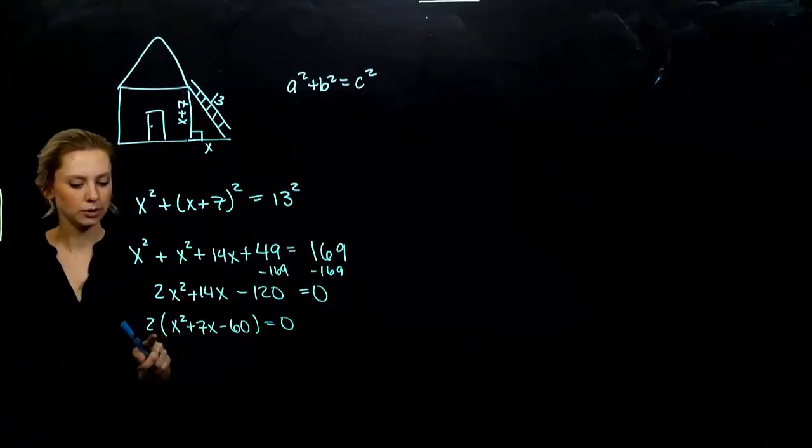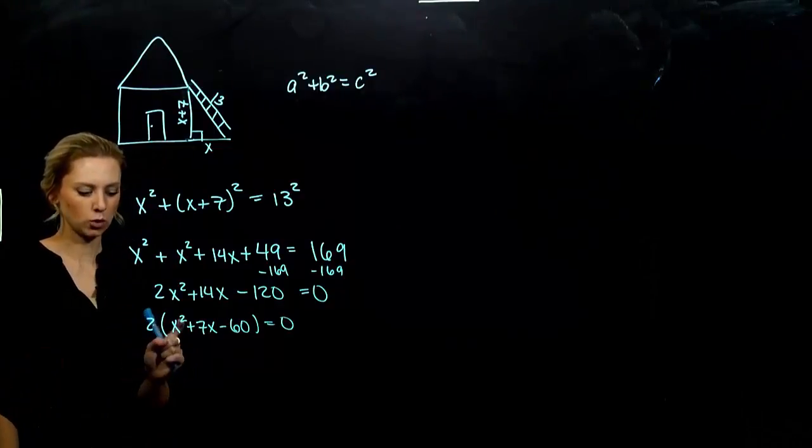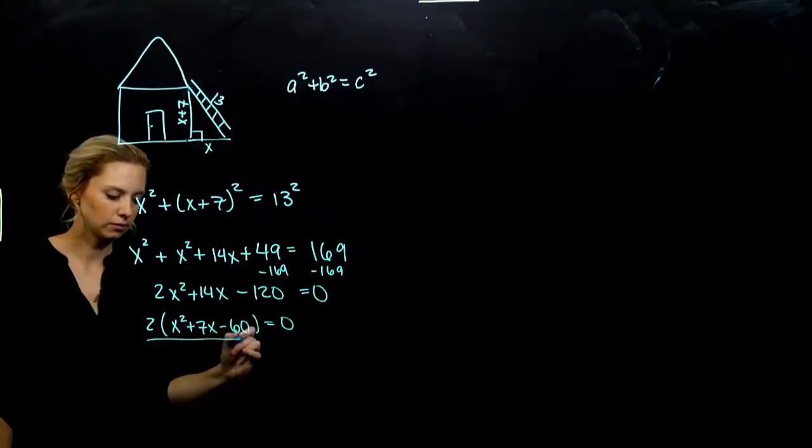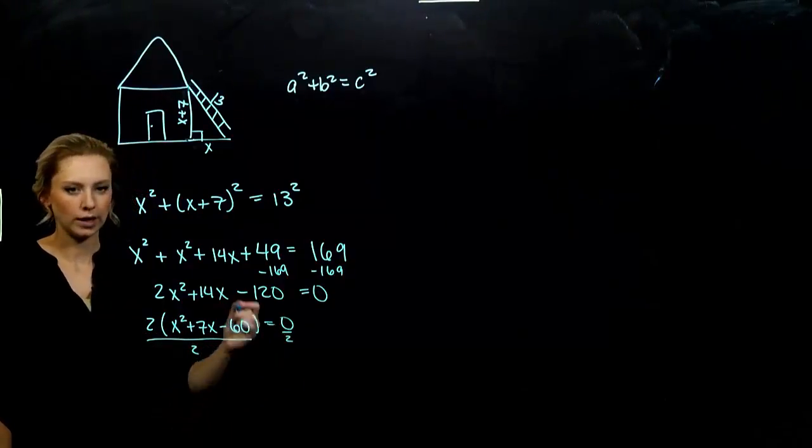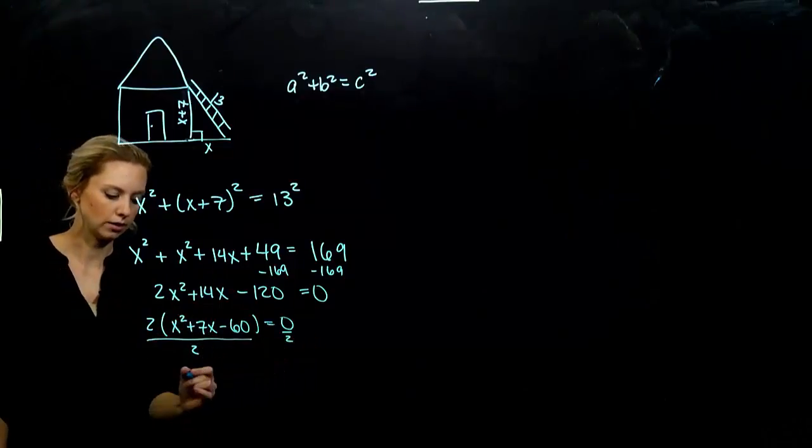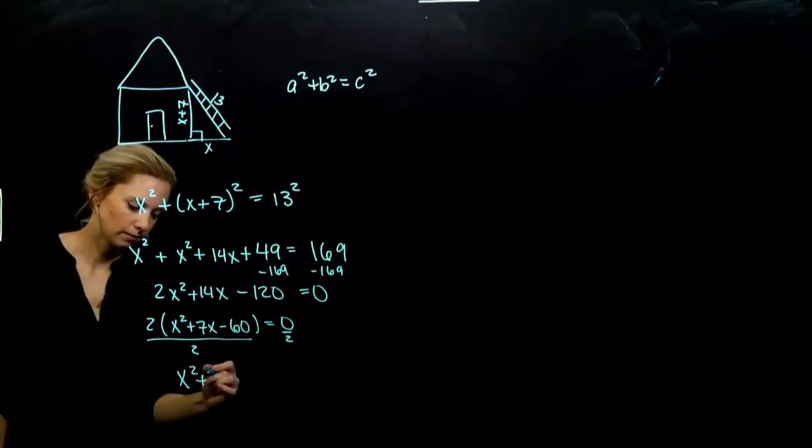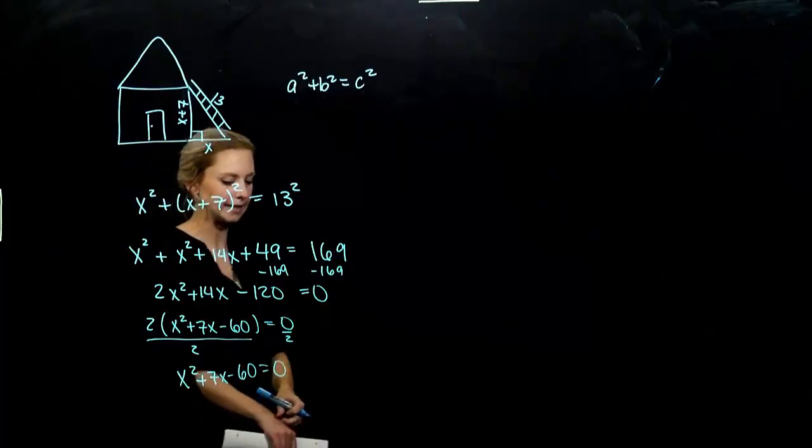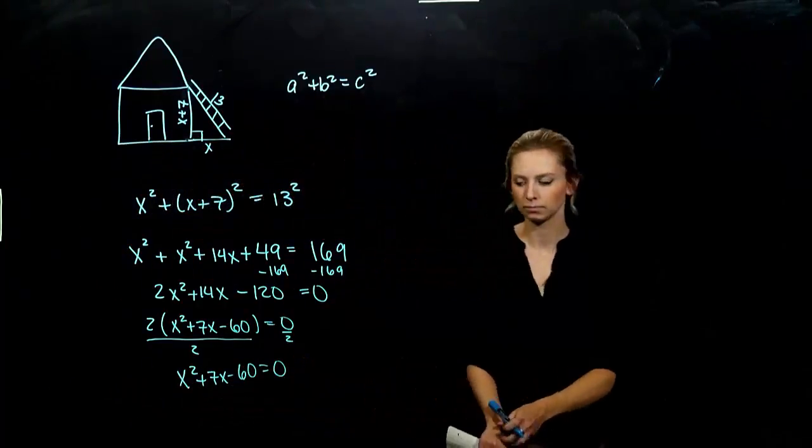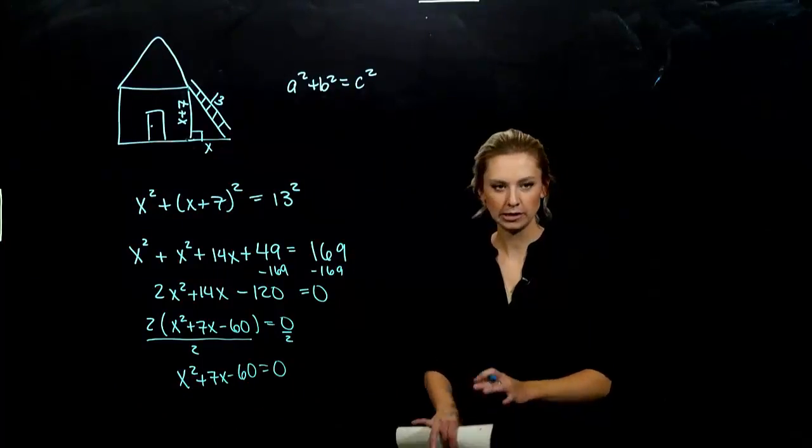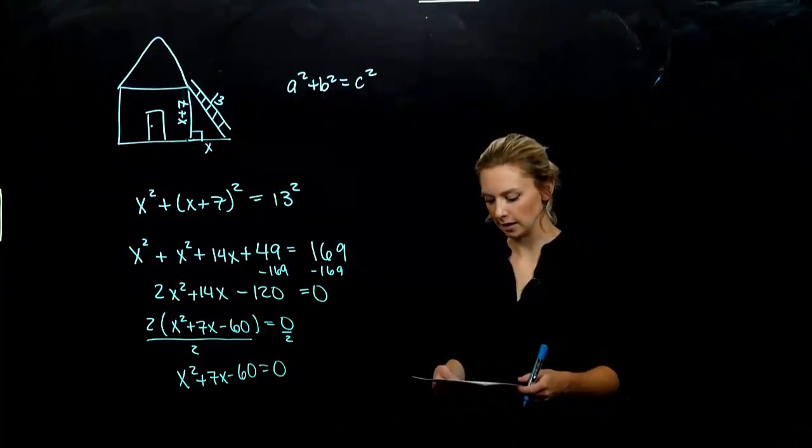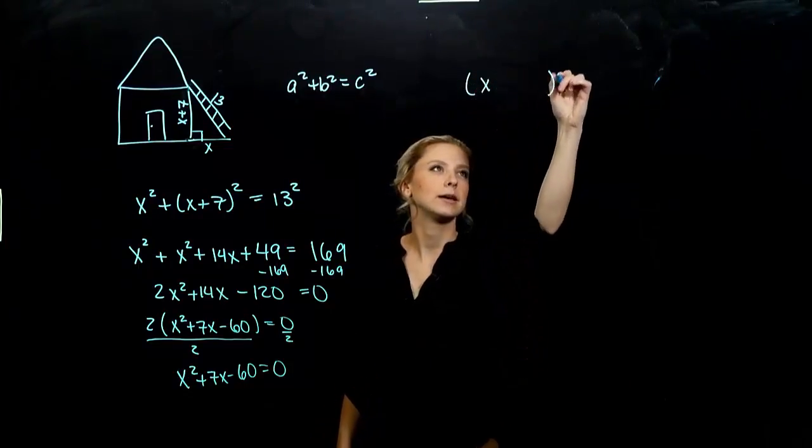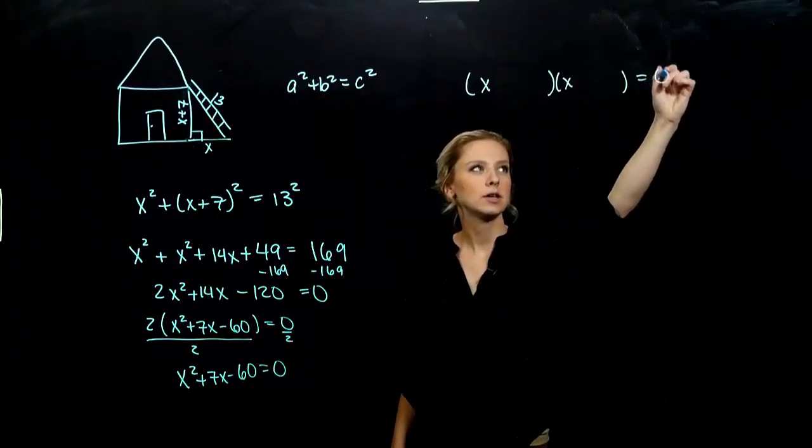Does that two contribute at all to our answer? No, because we're just worried about those x values. If we want to, we can divide everything by two. What I do to one side, I have to do to the other. Zero divided by anything is still zero. Now I've got my plain trinomial in the easiest form that I can see. We need to factor. I know that there's a 1 out on the front. It's going to be (x)(x) equal to zero.